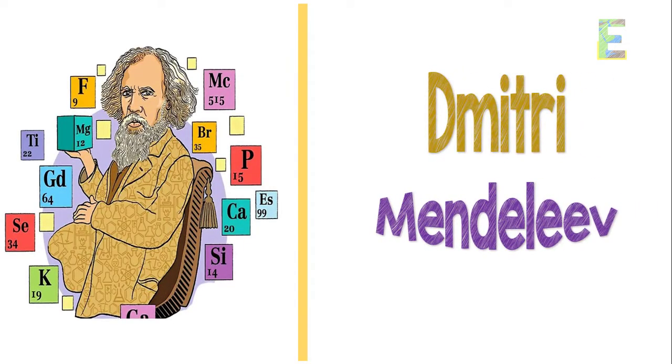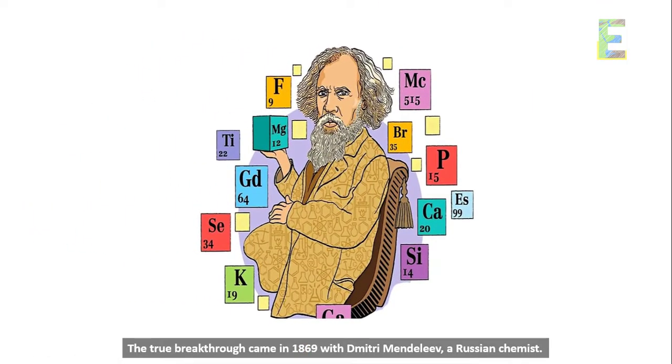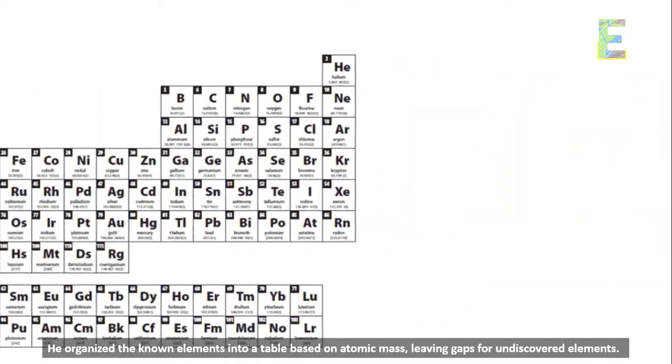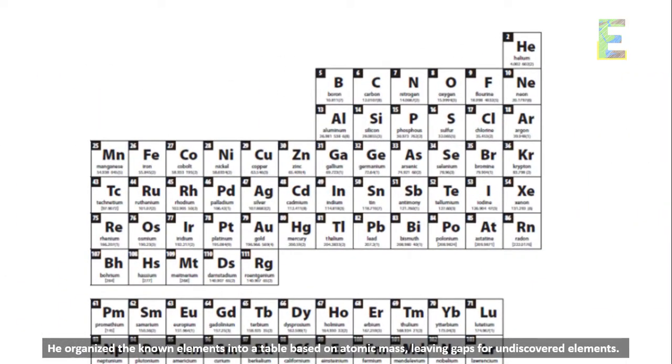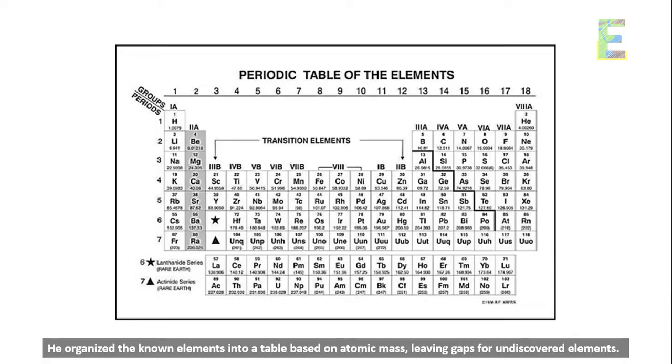Dmitry Mendeleev. The true breakthrough came in 1869 with Dmitry Mendeleev, a Russian chemist. He organized the known elements into a table based on atomic mass, leaving gaps for undiscovered elements.